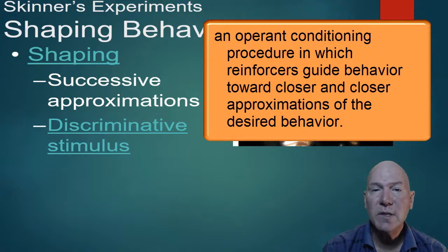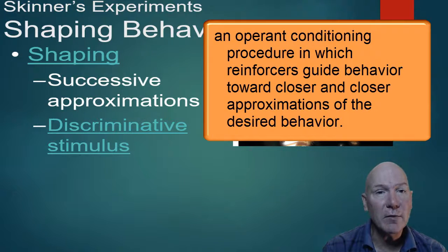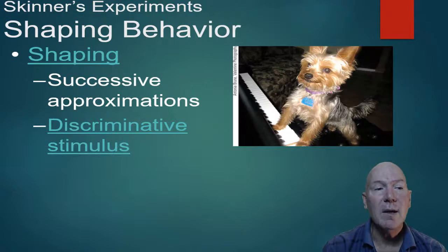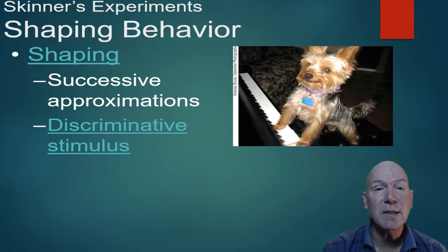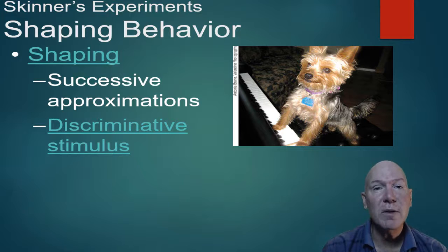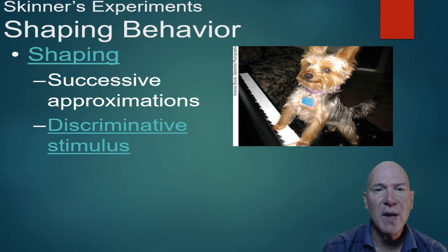In shaping, each step in the successive approximations gets reinforced until the previous step is no longer reinforced. For example, once the rat sniffs the lever, we stop reinforcing sniffing and wait until it accidentally touches the lever with its paw, then reinforce that. Finally, it must actually press the lever to be reinforced. We reinforce a series of behaviors that leads to the target behavior.